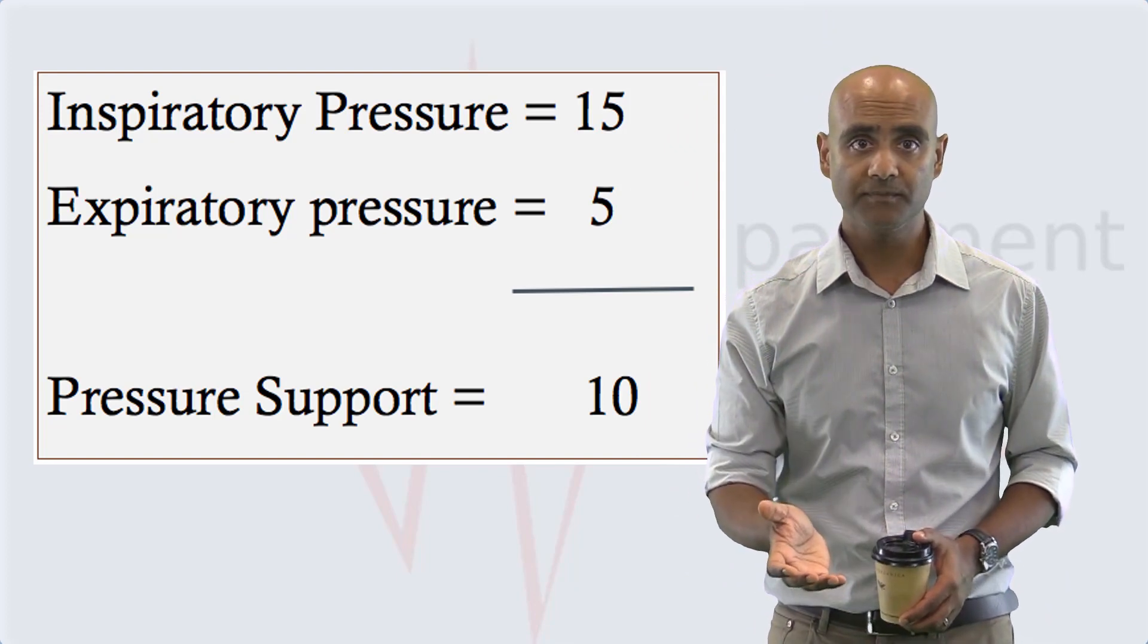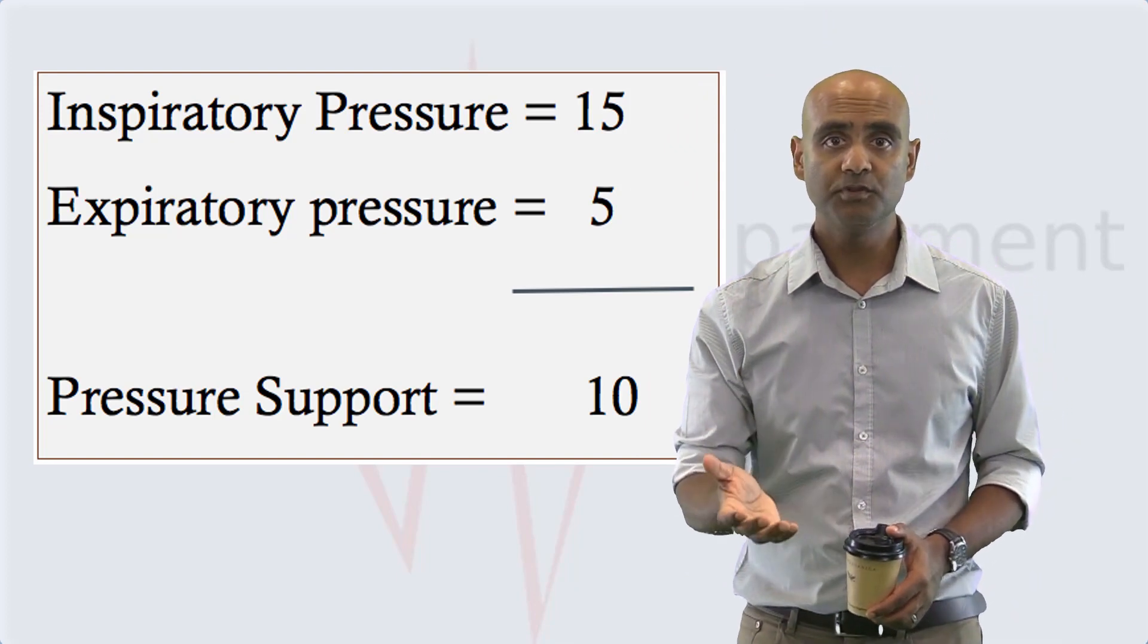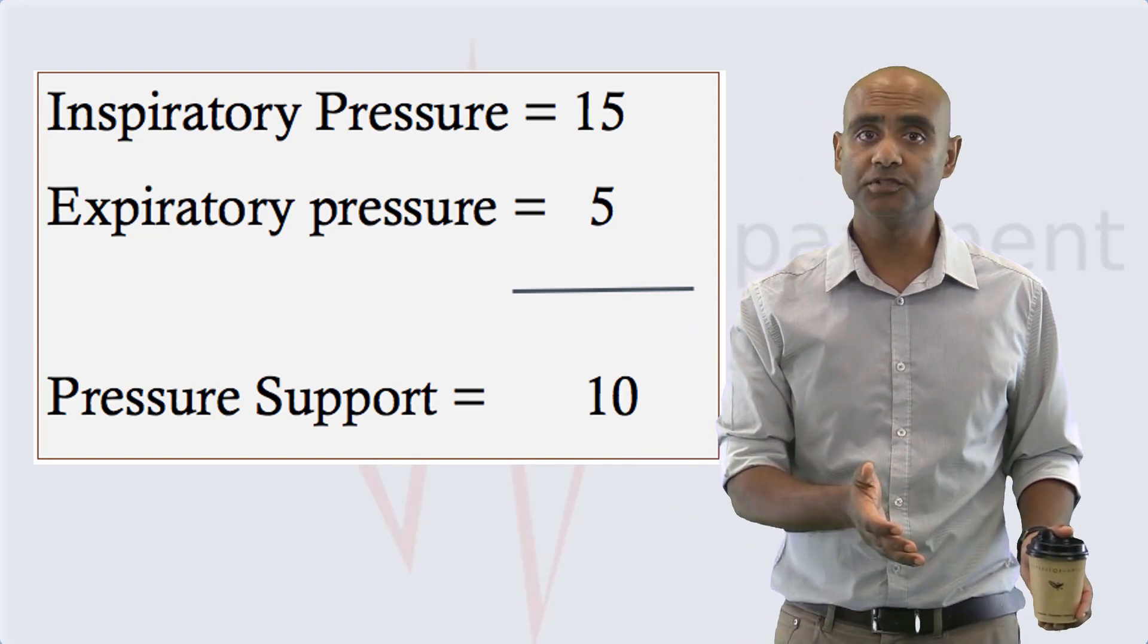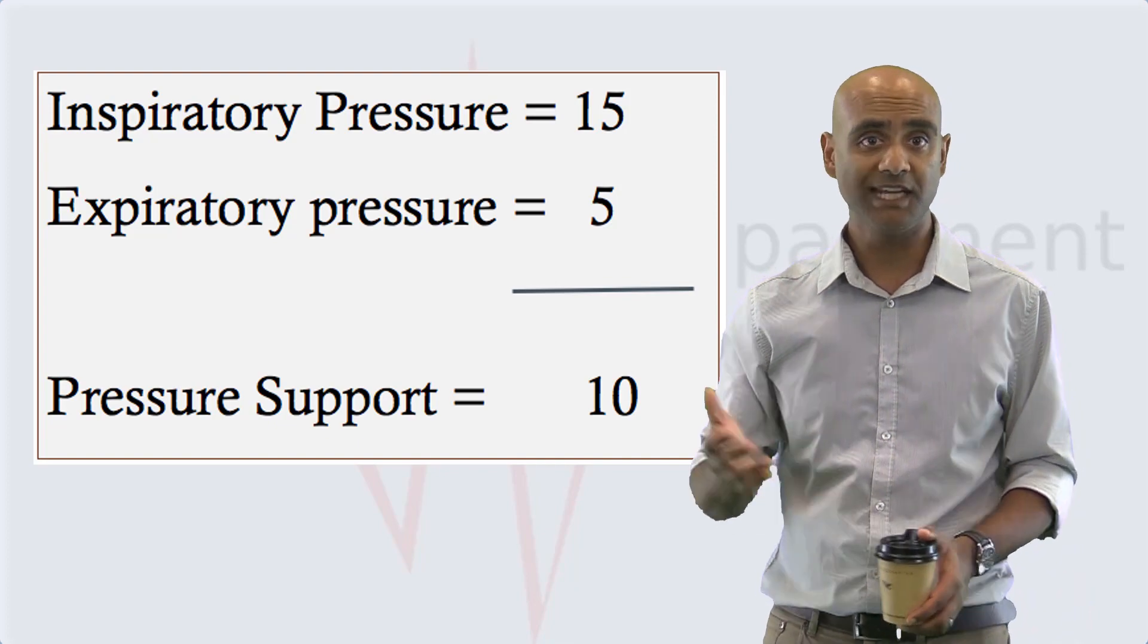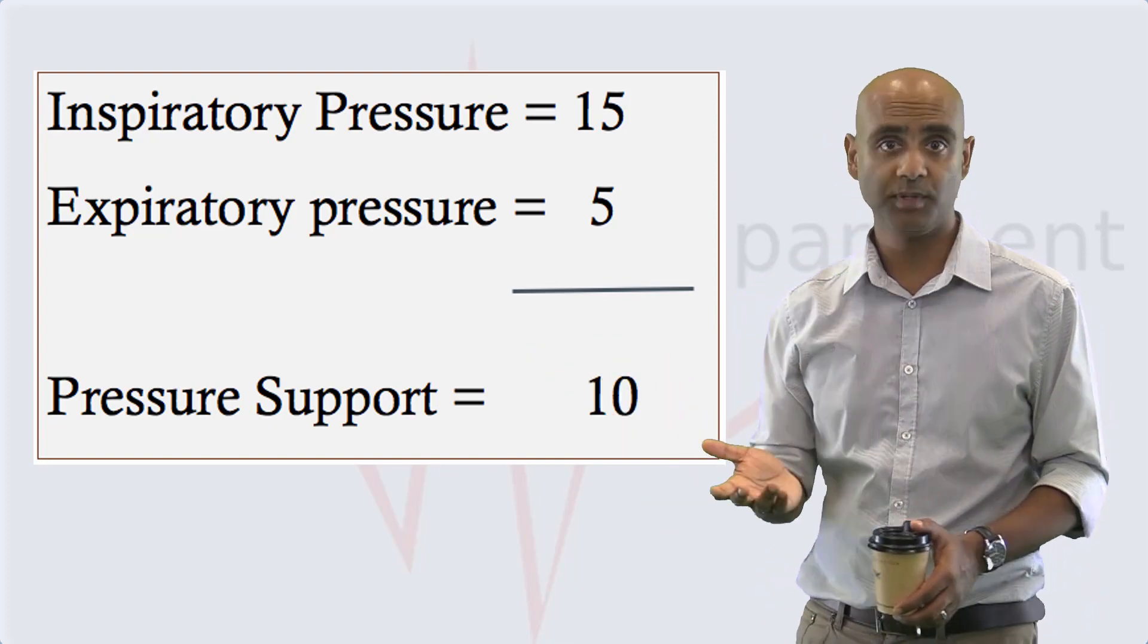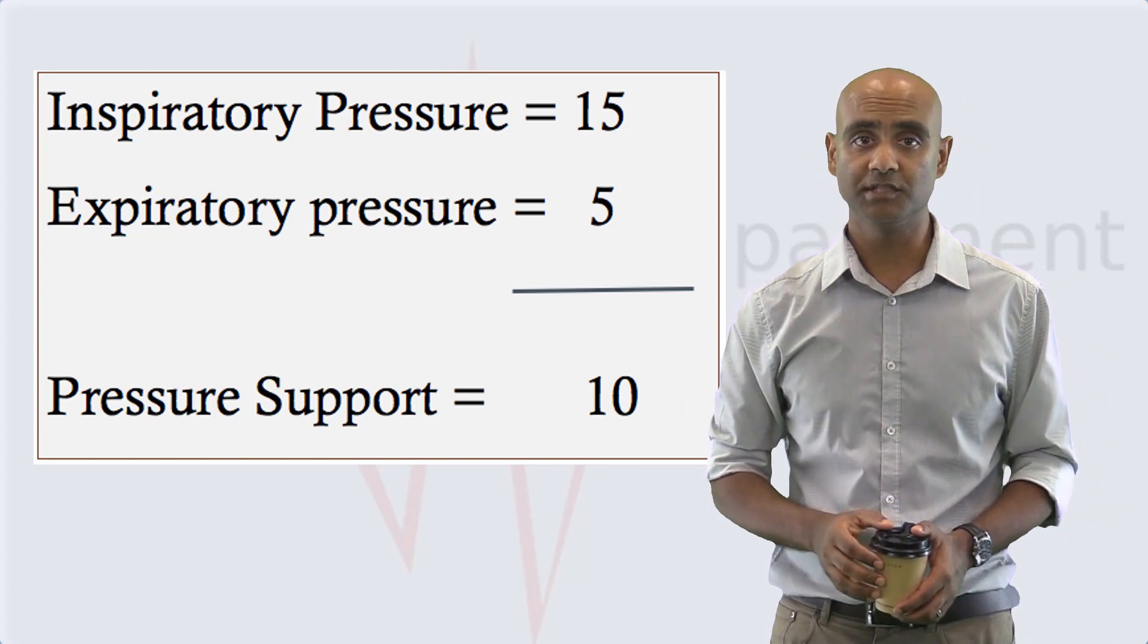As you can see, setting an inspiratory pressure of 15 and an expiratory pressure of 5 now produces a pressure support of 10 centimetres of water, as compared to the 6 centimetres of water he was receiving previously.